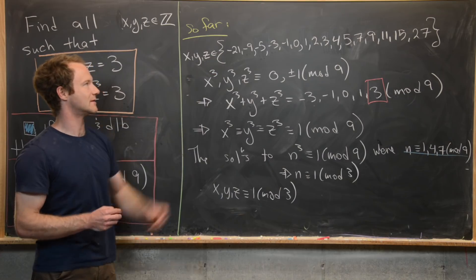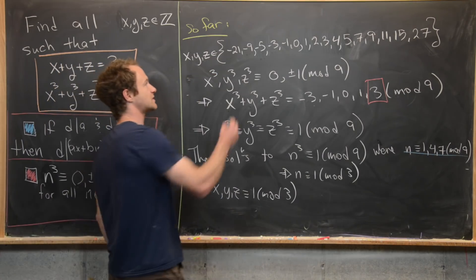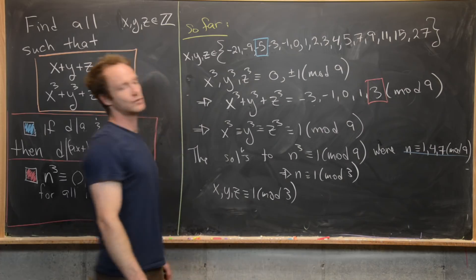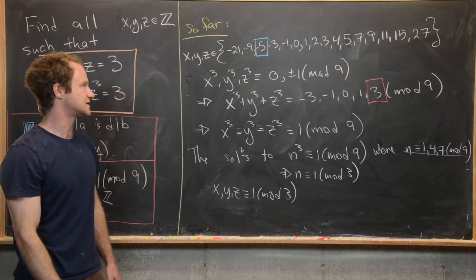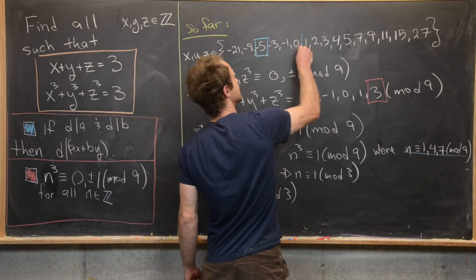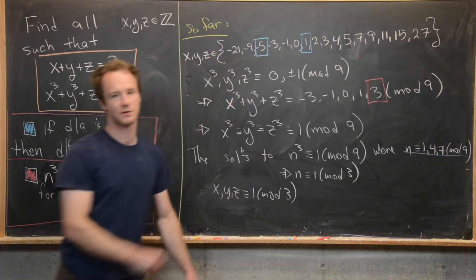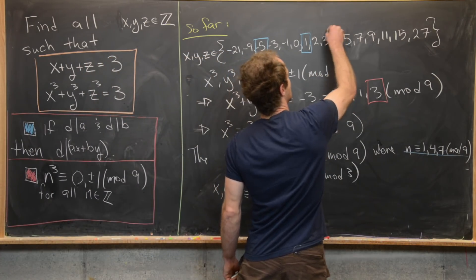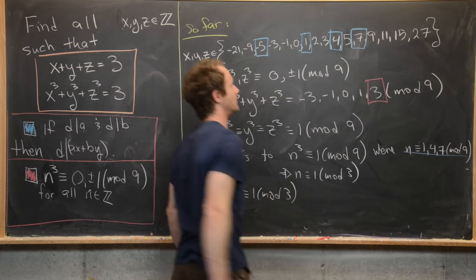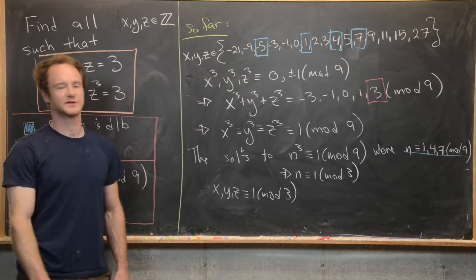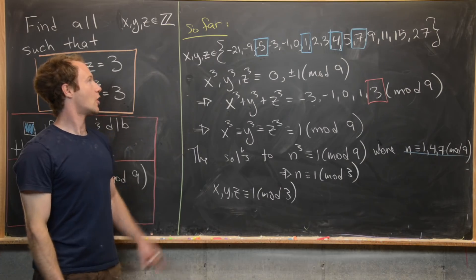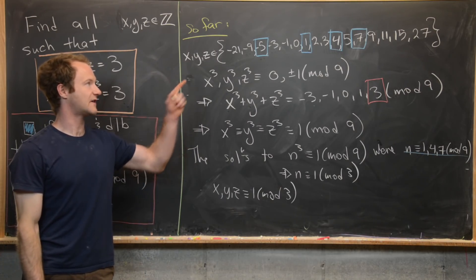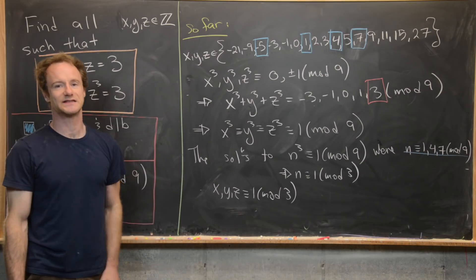Looking at which numbers in our candidate set are congruent to one mod three: negative five works (it's one more than negative six, a multiple of three), one works, four works, and seven works. So the only possibilities for x, y, and z are negative five, one, four, and seven.